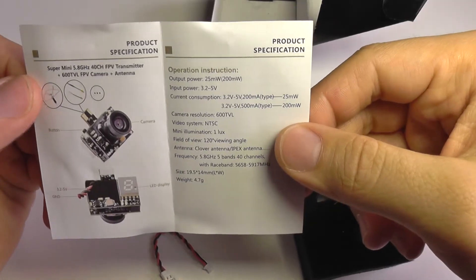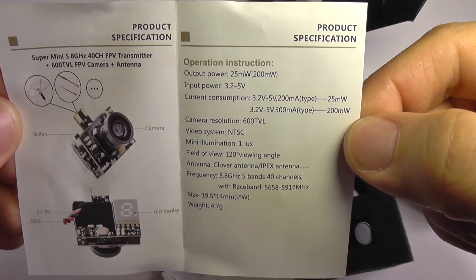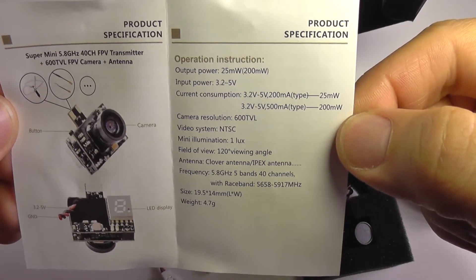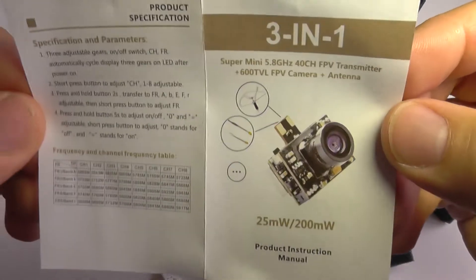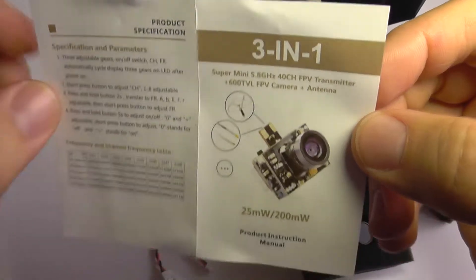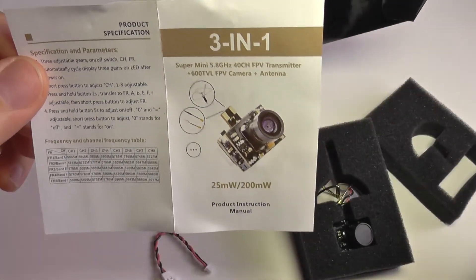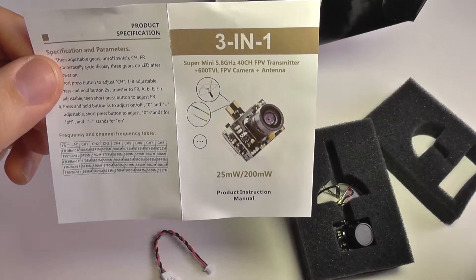You can see here the specifications - you can pause the video if you want to. Here are the list with the channels - it has 40 channels, it has 600 TV lines camera so the resolution is pretty good.